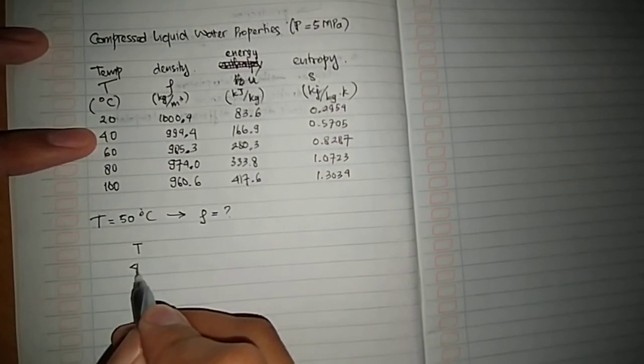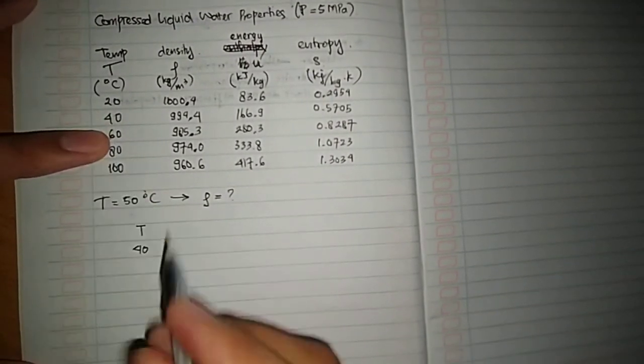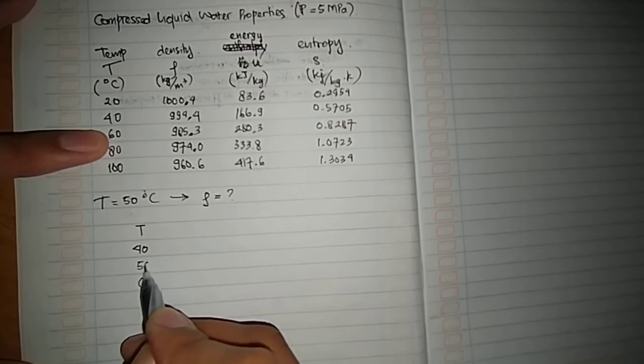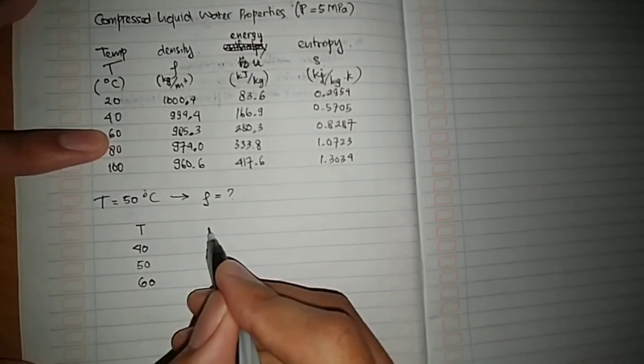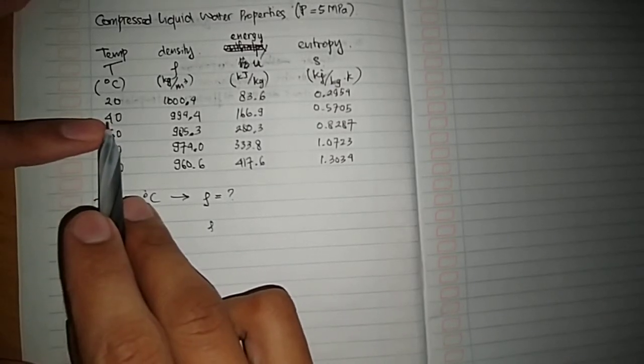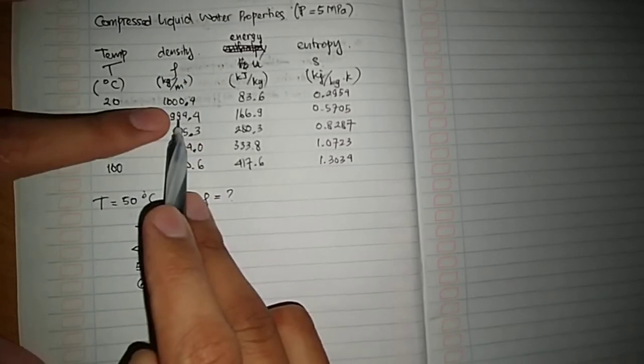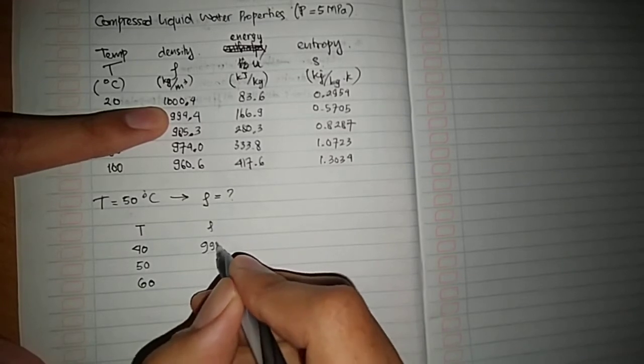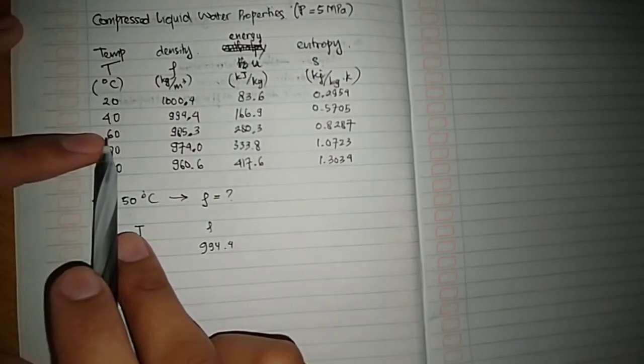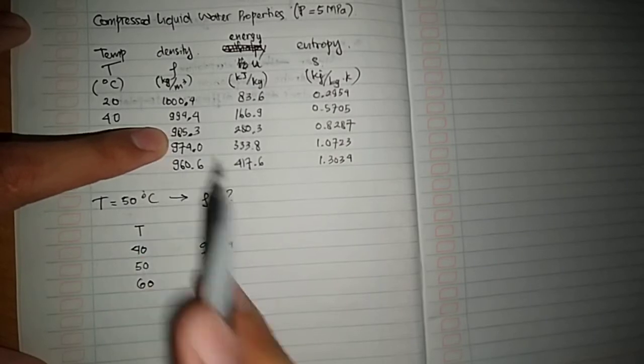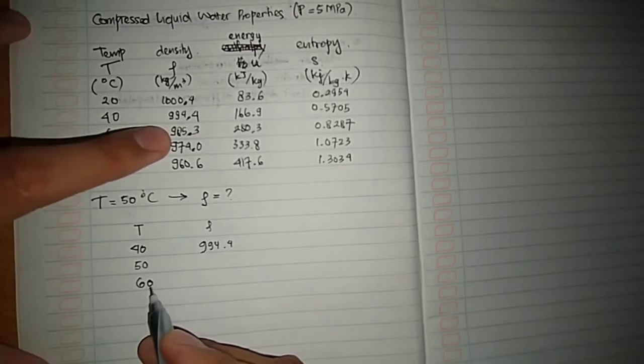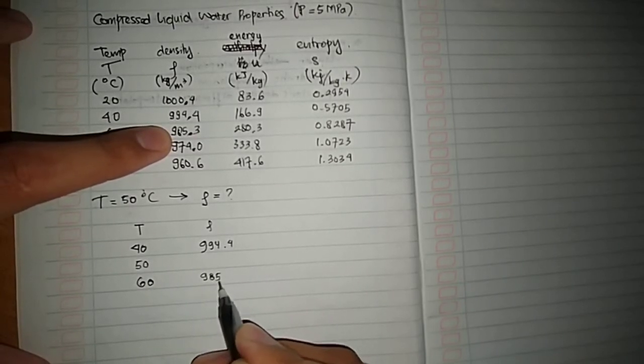And 50 is between 40 and 60. Now this is for the table row. When the temperature is 40, then the density or rho is this number: 994.4. Now for 60, when the temperature is 60, then the density will be this number: 985.3.